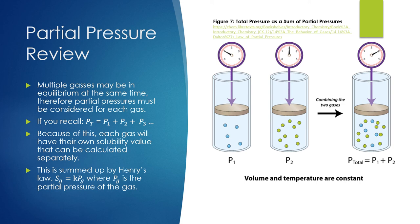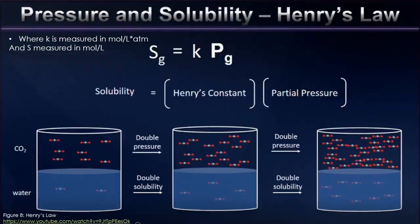This leads us into our discussion of Henry's Law, which states that the solubility of a gas into a liquid is directly proportional to the partial pressure of that gas over top of the liquid. The Henry's Law equation is shown above in this diagram. You can see that the solubility of a gas in question is equal to some constant k times the partial pressure of the gas. Solubility of the gas is equal to the moles per liter of gas dissolved into the solution, so by calculating the solubility of the gas, we know exactly how much of the gas is dissolved into the solution.